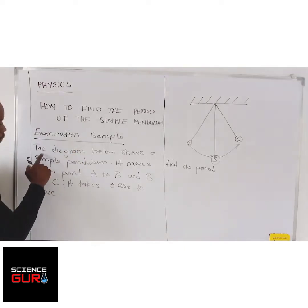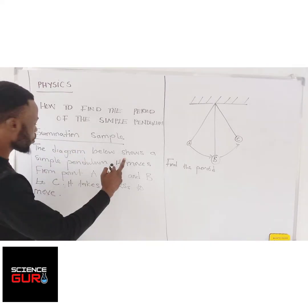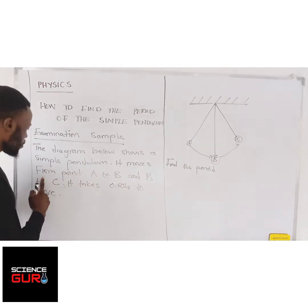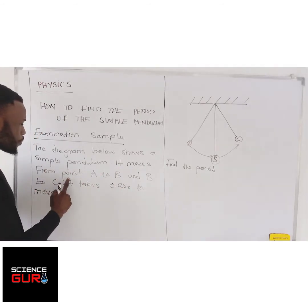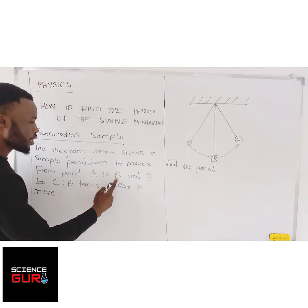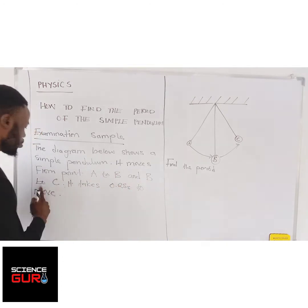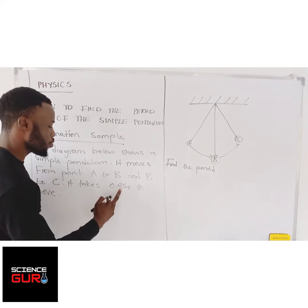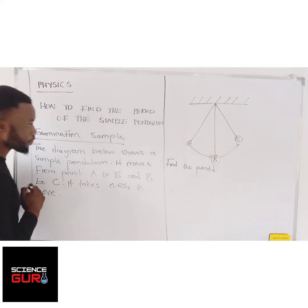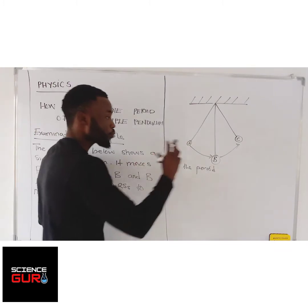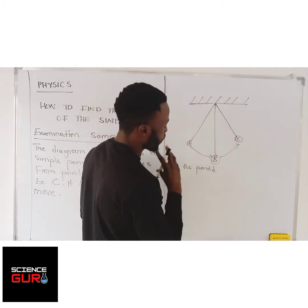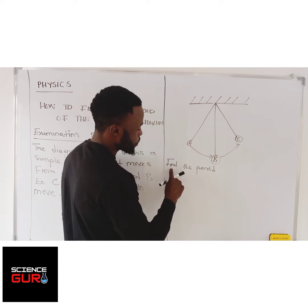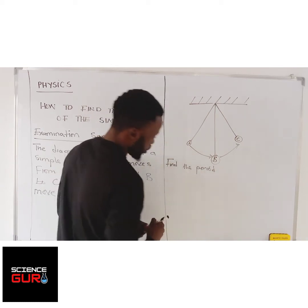Examination sample: the diagram below shows a simple pendulum. It moves from point A to B and B to C. It takes 0.25 seconds to move. This is a sample of the diagram. Then they tell you to find the period.